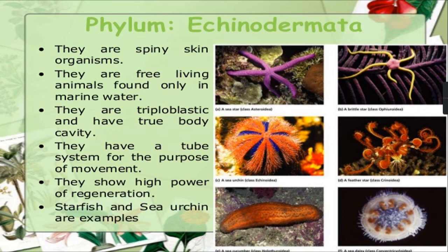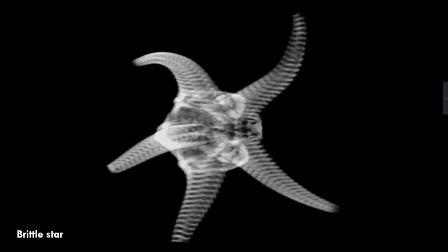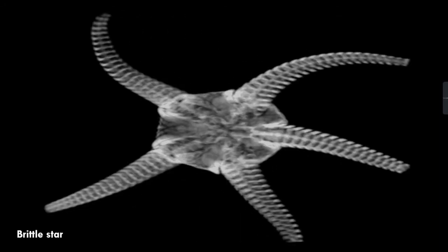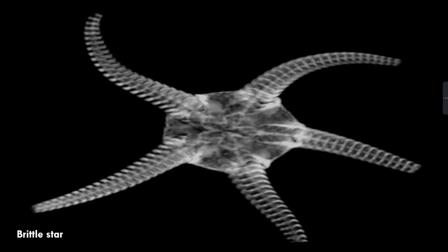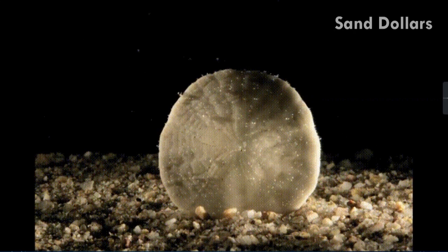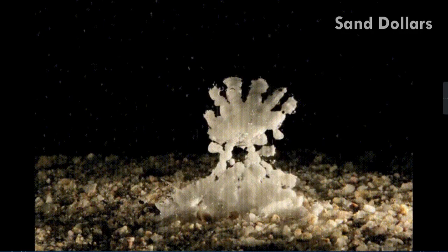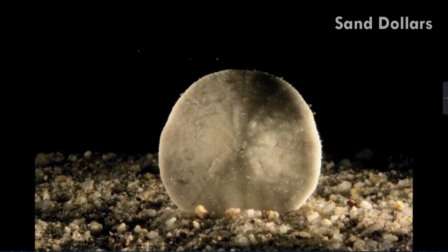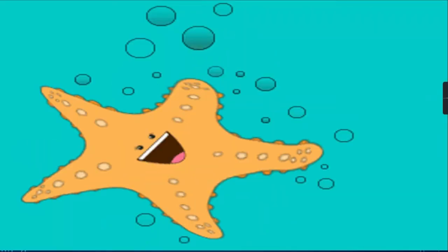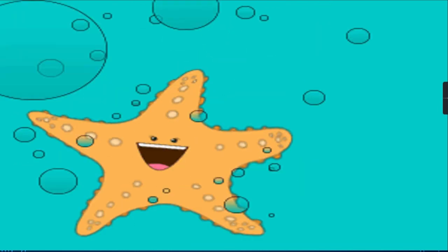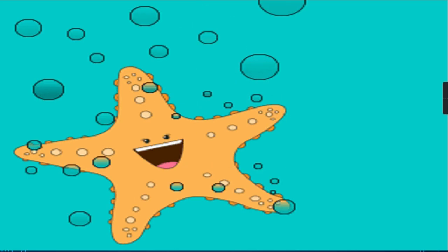Examples of Echinodermata include starfish, sea urchins, sand dollars, brittle stars, and sea cucumbers. Brittle star is also one of the common examples of Echinodermata. Hope you have understood and enjoyed learning about Echinodermata. Thank you and have a great day!